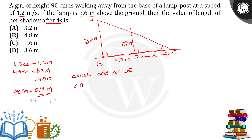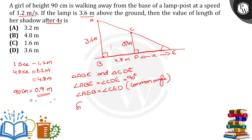These are the two triangles. We can say angle ABE equals angle CDE — both equal 90 degrees — and angle AEB equals angle CED, which is a common angle. So by AA similarity, triangle ABE is similar to triangle CDE.